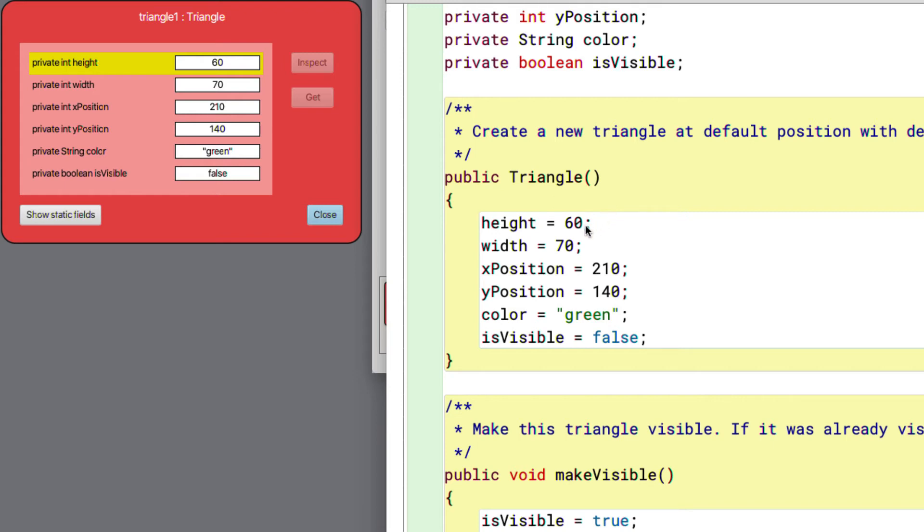But here we're seeing the initialization of the state of a triangle object. So these particular data values are here because the source code sets those particular values to be the initial state of a triangle object when it's created.